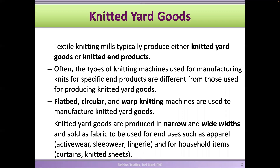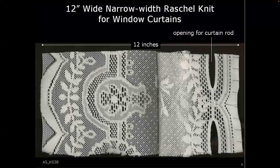We have different kinds of machines: flat bed machines, which make one-dimensional fabric, and circular knitting machines that make circular fabrics. Warp knitting machines are a little different. This is a Raschel knit — a warp knit example made for window curtains. They actually create the opening for the curtain rod while knitting the fabric, so you don't have to do any stitching afterwards.